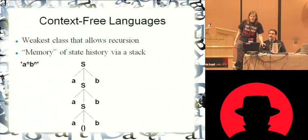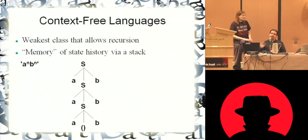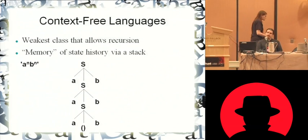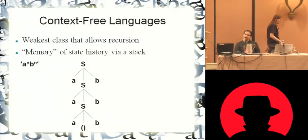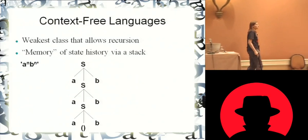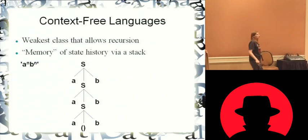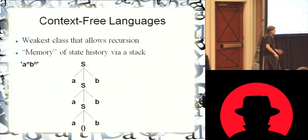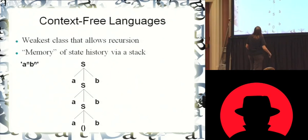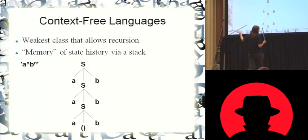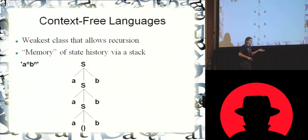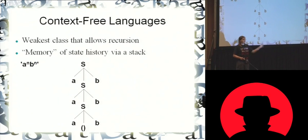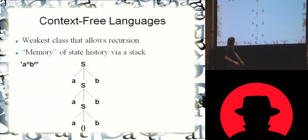All right, so the next step up is the context-free languages. With the context-free languages, you get recursion. It's not actually possible to produce a finite state machine that generates A^n B^n — which is to say some number of A's followed by the same number of B's.